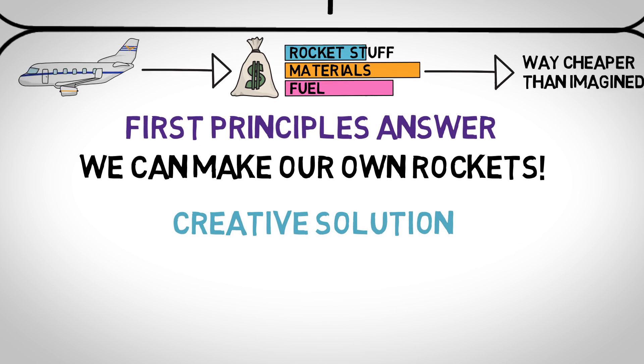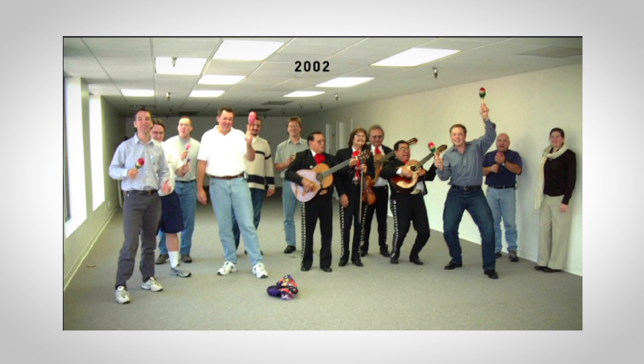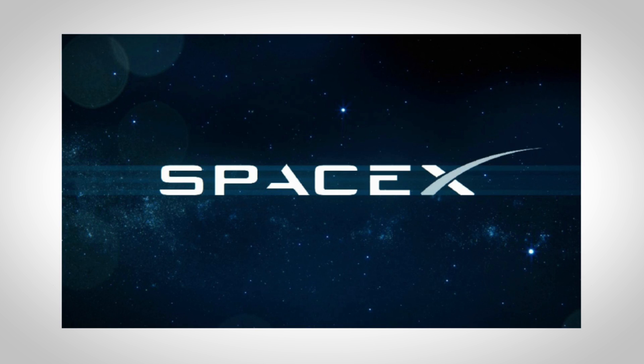Elon set out to make this dream happen, so he gathered a team, refined the plans based off the first principles, giving birth to SpaceX, on June 2002.